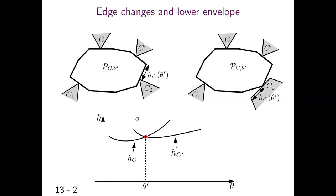The function h_C appears as the following graph. If the changes occur with touches C1, C2, C, and C' at angle zeta', the graphs of functions h_C and h_C' intersect each other at zeta'.